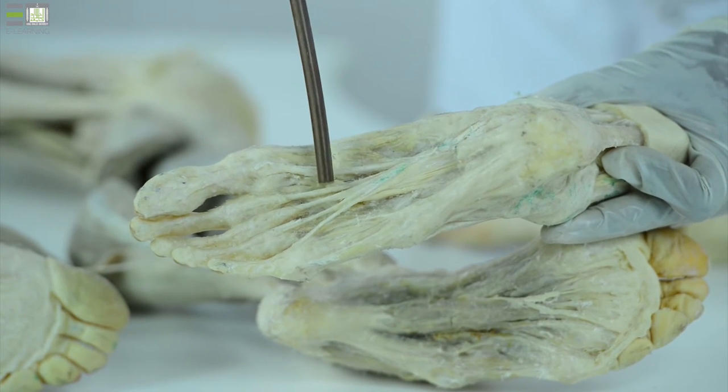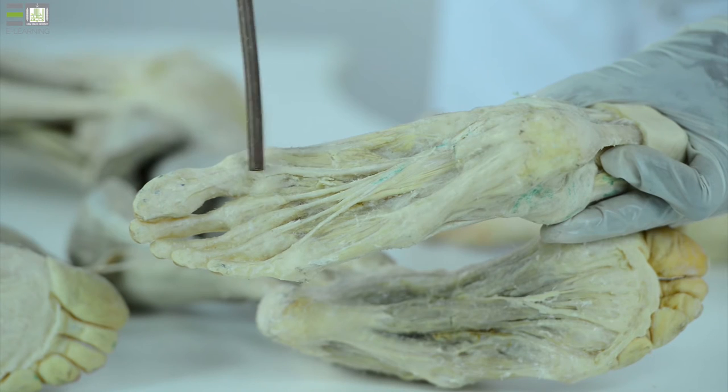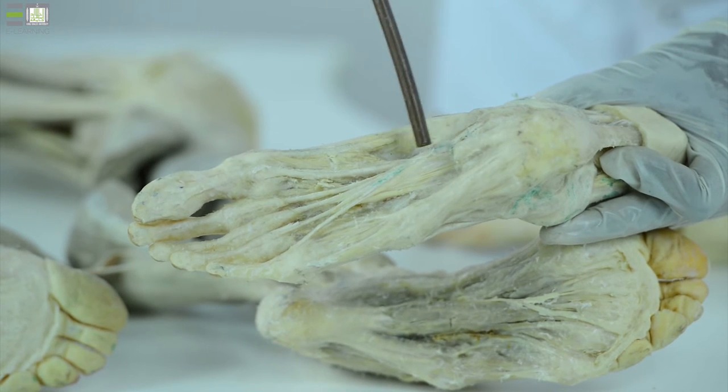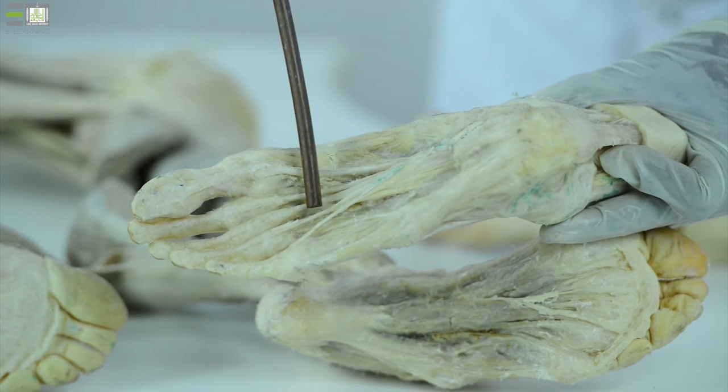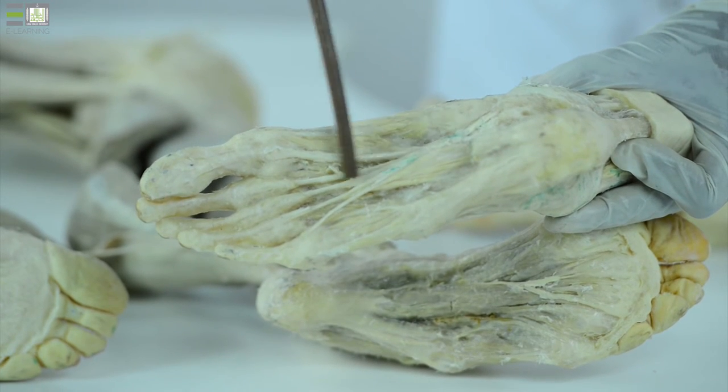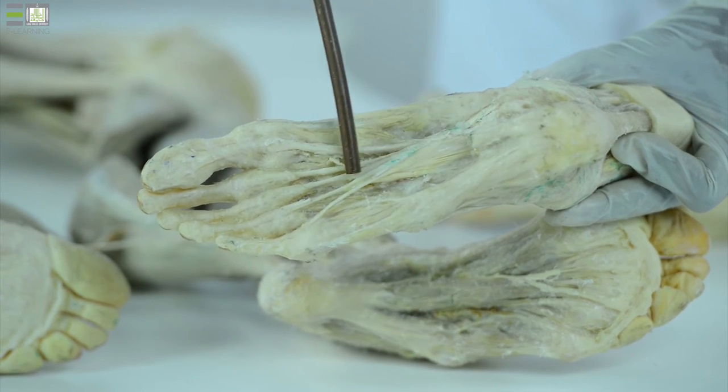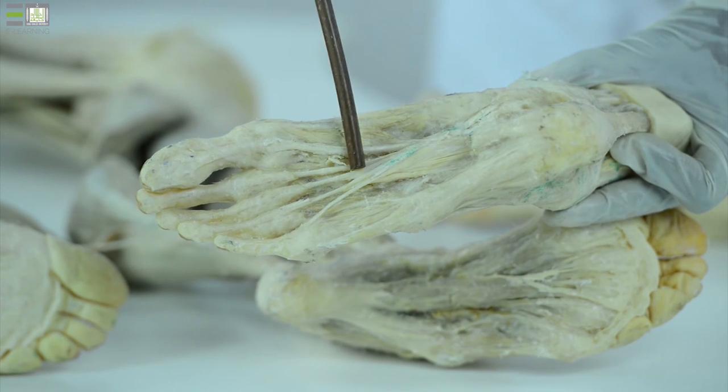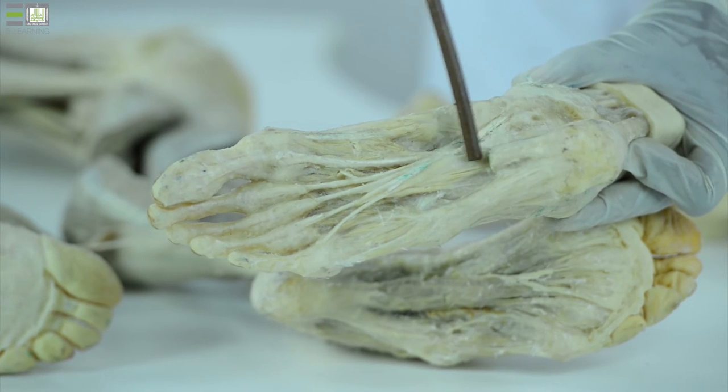These two tendons, the hallucis to the tip of the big toe and the flexor digitorum for the lateral four toes. Along its course, the tendon of flexor digitorum longus receives the attachment of this muscle, which comes from the calcaneum called flexor digitorum accessorius or quadratus plantae.